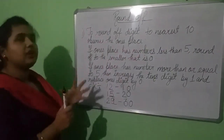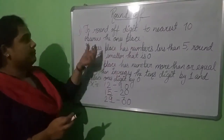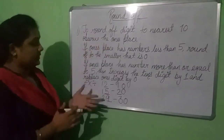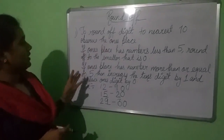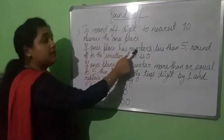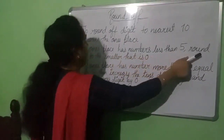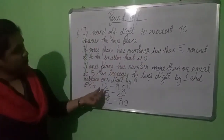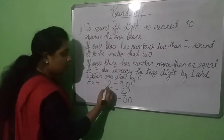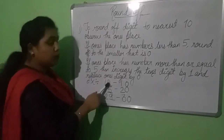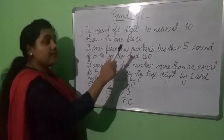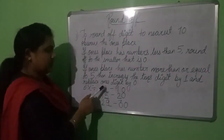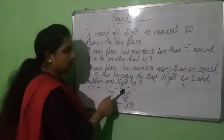Whenever we are talking about rounding to the nearest 10, what place value do we need to observe? The 1's place. If the 1's place has a number less than 5, we round down to 0. Here the number I have written is 12. At the 1's place value, we have 2, which is less than 5. So we are going to write 0 at the 1's place and keep the 10's place as it is.